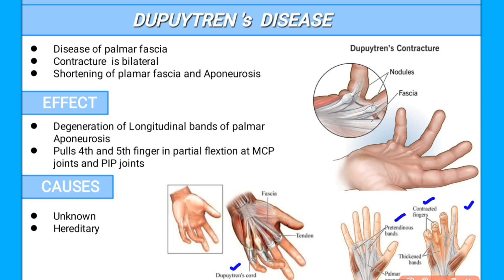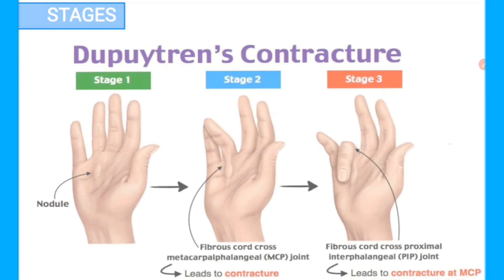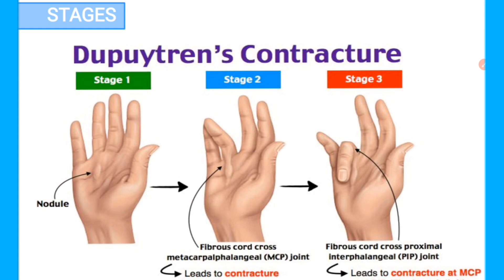These are the Dupuytren's cords. These Dupuytren's cords or nodules cause partial flexion of the fourth and fifth fingers at the metacarpophalangeal joint and proximal interphalangeal joint.